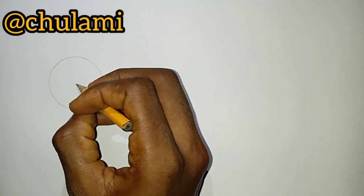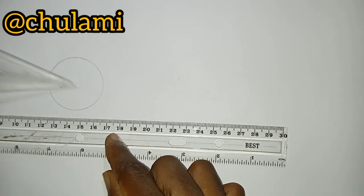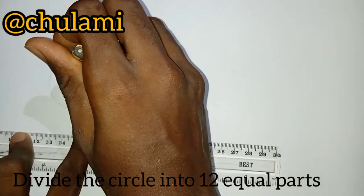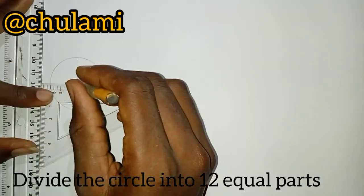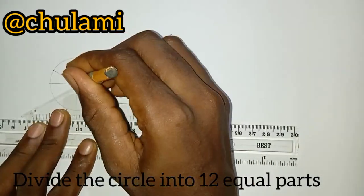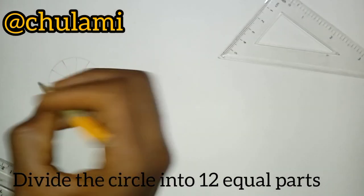Now after drawing this circle I'm dividing it into 12 equal parts. If you don't know how to divide a circle into 12 equal parts, go to the description of this video where I will drop a link so you can watch and learn.